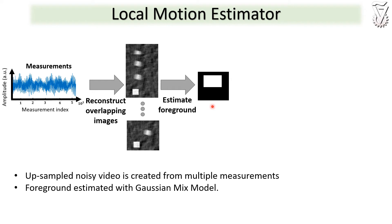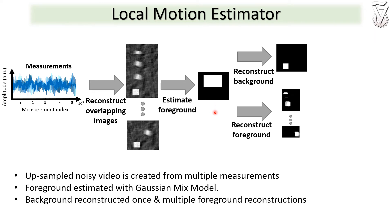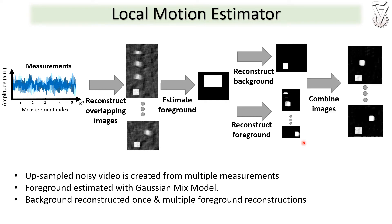We then use the estimated foreground and our measurements to individually reconstruct the background and the foreground. Once we have both reconstructions, we combine them for our final series of images.